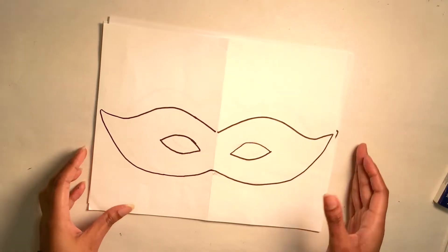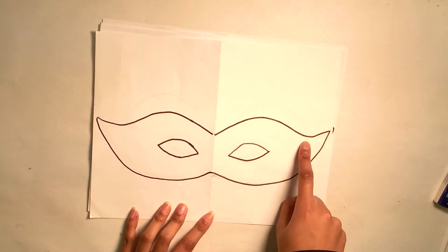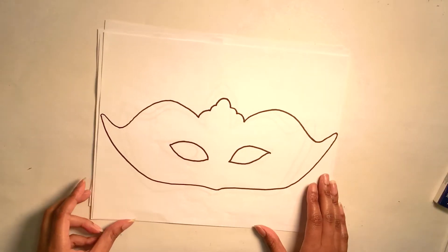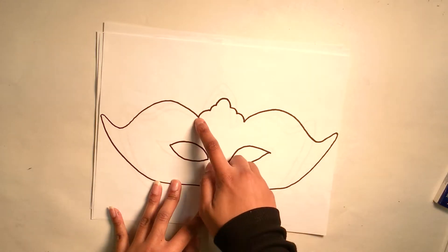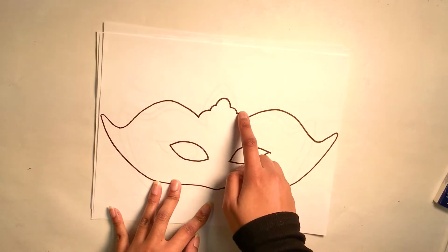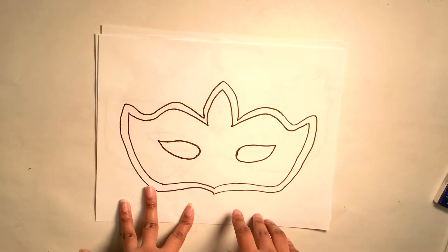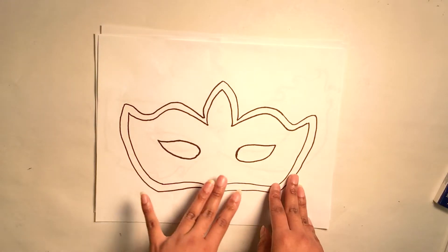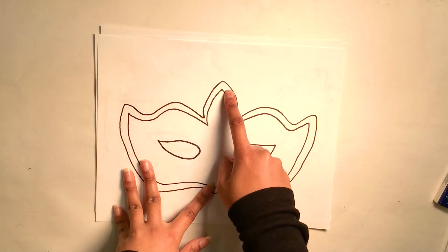So our first example is this traditional masquerade mask. It has pointed ends. The second one is another masquerade mask but it has a round edge in the middle. The third is a masquerade mask but is more crown-like shape with one single pointed edge.